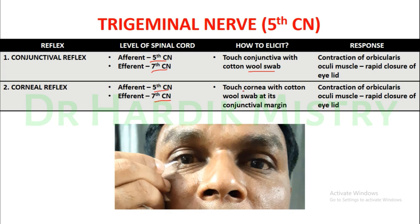For the corneal reflex, touch the cornea with a cotton wool swab at its conjunctival margin. The response will be the same — contraction of the orbicularis oculi muscle and rapid closure of the eyelid. So in the trigeminal nerve examination, we check both the conjunctival reflex and the corneal reflex.